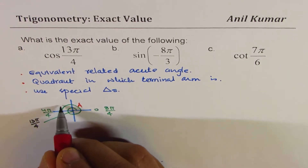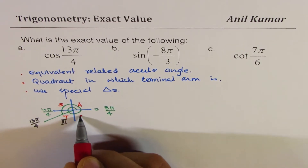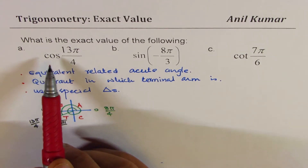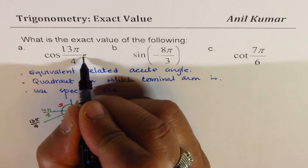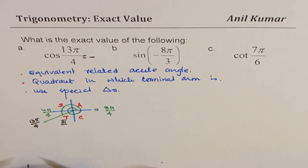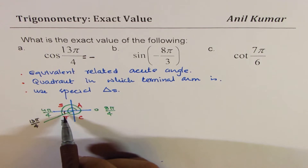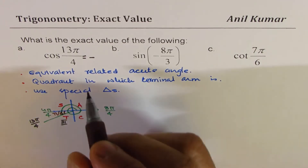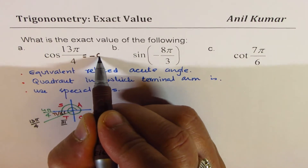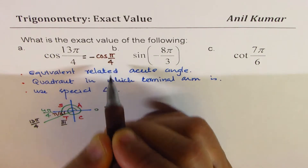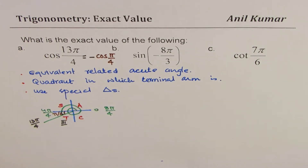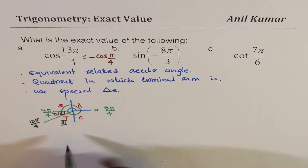Applying the CAST rule — all positive in Q1, sine in Q2, tan in Q3, cosine in Q4 — cos(13π/4) must be negative because we are in Quadrant 3. The related acute angle is π/4, since it is π/4 beyond the negative x-axis. So the equivalent expression is negative cos(π/4).